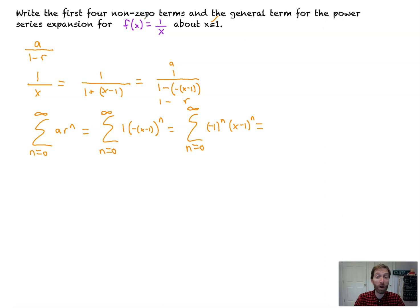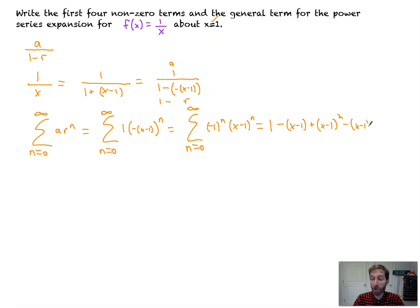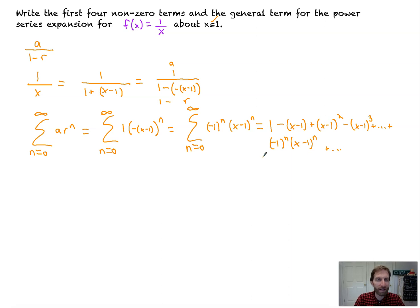We're asked for the first four non-zero terms and the general term. That equals: the first term when you plug in n=0 is just 1. Then minus (x minus 1), plus (x minus 1) squared, minus (x minus 1) cubed — that's the first four non-zero terms — plus dot dot dot plus negative 1 to the n times (x minus 1) to the n. There's your general term. And if that looks like something similar to the natural log, more on that in a little bit.